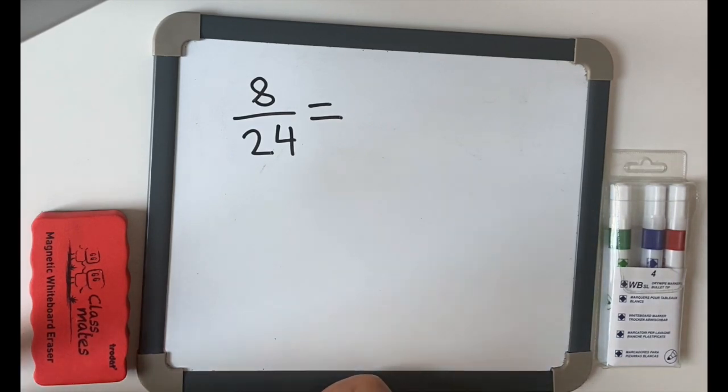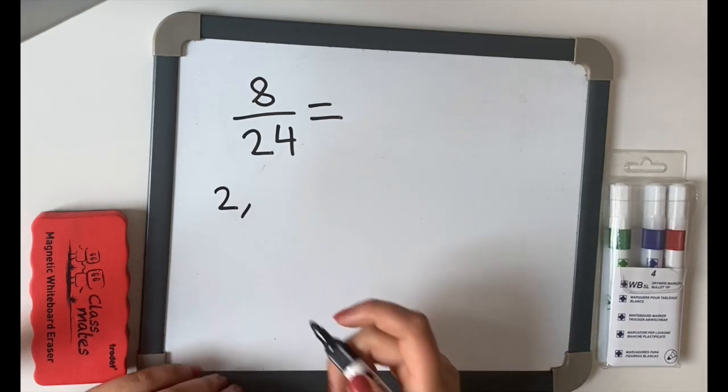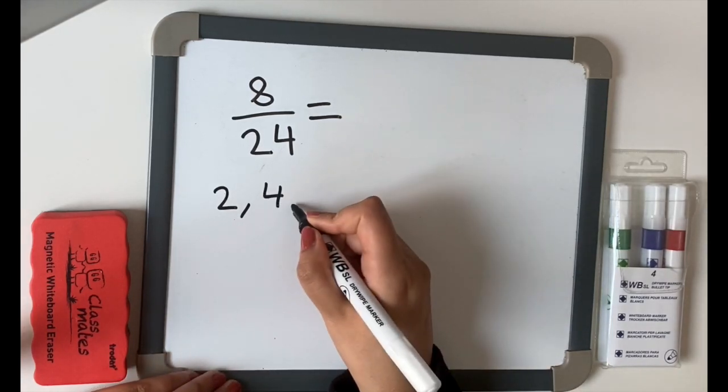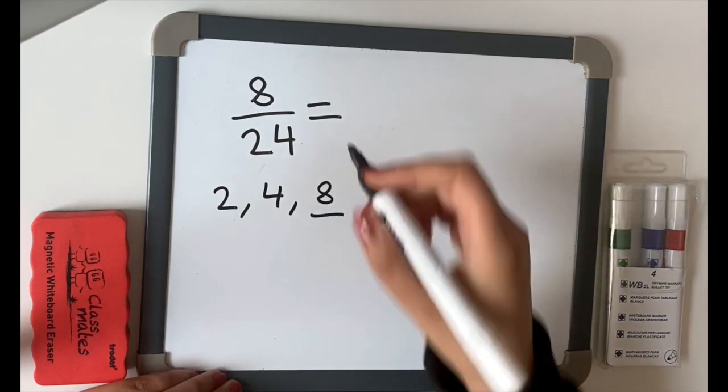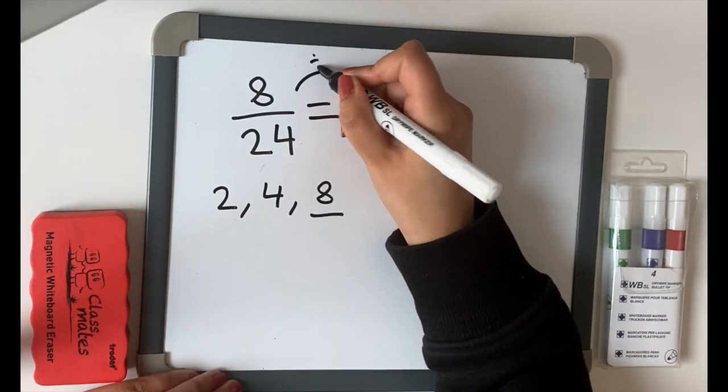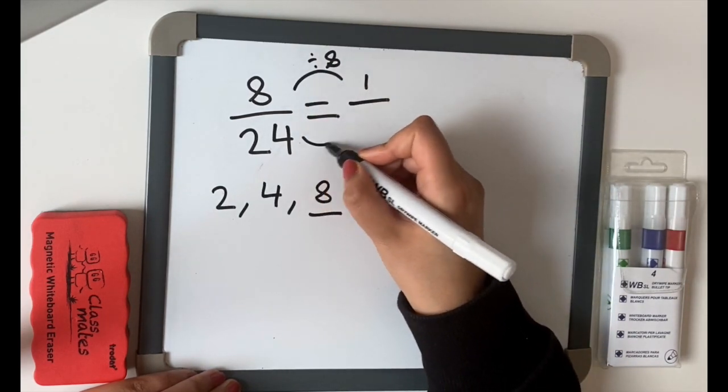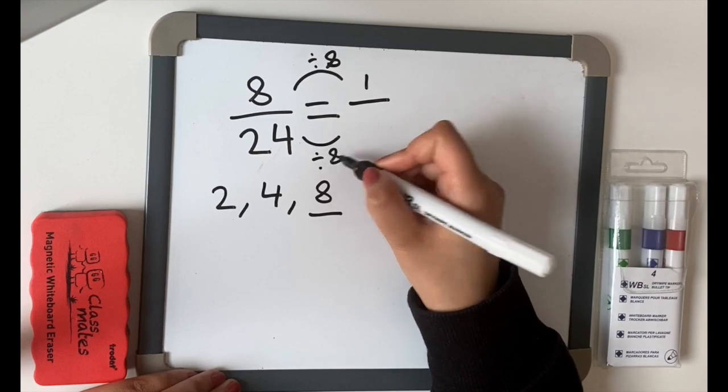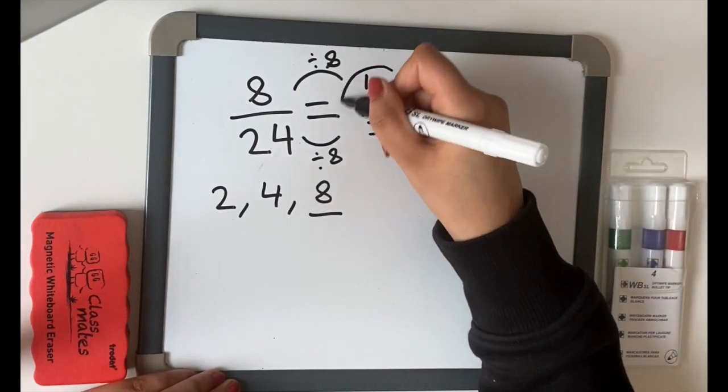8, 16, 24. So the highest number there will be 8. We tried 2, it worked but it was too small. 3 didn't work. 4 did, and now 8 does. So let's go with 8. 8 divided by 8 equals 1. What you do to the top, you must do to the bottom. 24 divided by 8 equals 3. So the answer is 1 third.